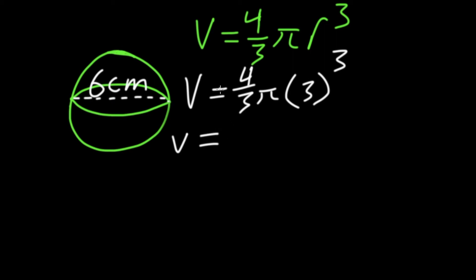From here, all we have to do is work down. So volume equals 4 over 3 pi. 3 cubed is 27 because 3 cubed is just 3 times 3 times 3.